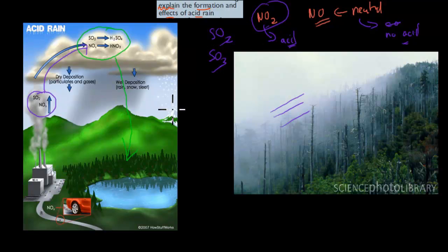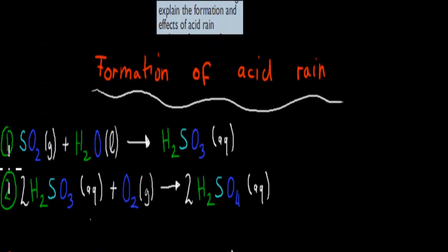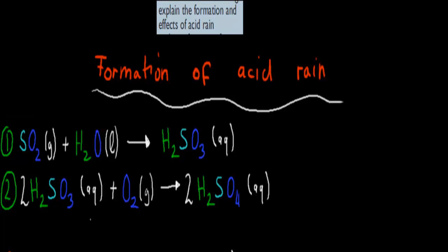First we're going to explain the formation, then go through the effects of acid rain. Because it says explain, you need to not just say how it happens but give a detailed explanation — plus some equations would be useful as well.